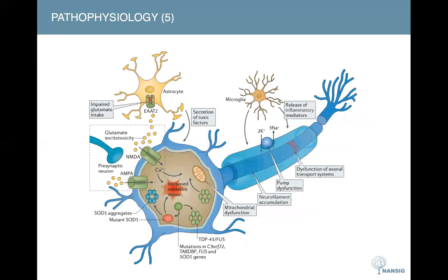Coming on to the pathophysiology — this is a very busy slide, but I will walk you through an overview. Look out for the red arrows, which I will use to indicate the molecular structures I'm referring to. The pathophysiological mechanisms underlying neurodegeneration are multifactorial, with evidence of a complex interplay between genetic mutations and dysfunction of molecular processes. Cortical hyperexcitability, or glutamate excitotoxicity, seems to be an important final common pathway. However, clinician scientists remain unsure whether the same multiple factors exert a pathogenic role in all patients, or whether a particular mechanism predominates in a specific patient.